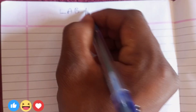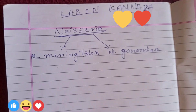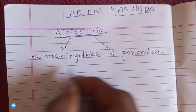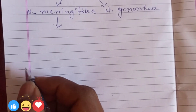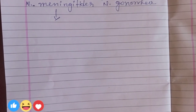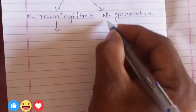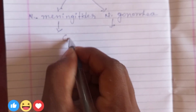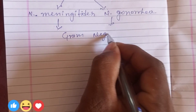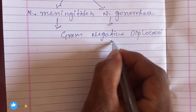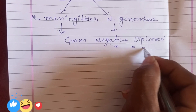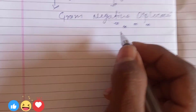This is Lamin. The common features of this one: Gram-negative diplococci. Paraclete diplococci.